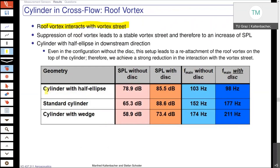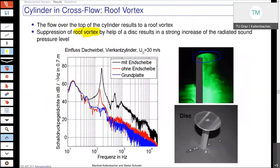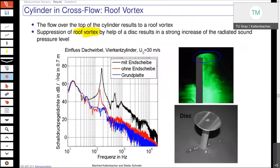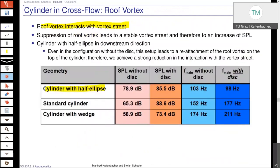It is clear that if you have this cylinder with the half ellipse — if we go back and look at this part from the top — when you have the detachment of the flow, you already have a reattachment somewhere in the region of the half ellipse. Therefore, in downstream direction, there will be less interaction with the vortices coming from the side walls of the cylinder. This nicely shows us that we have here really the highest sound pressure level for our standard cylinder, and the lowest sound pressure level for the configuration with the wedge in front — in upstream direction.